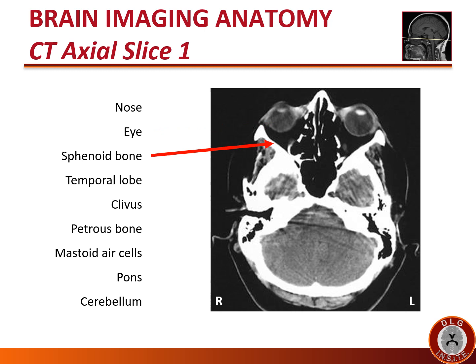The sphenoid bone is one of the bones that forms the orbit. Here, the inferior aspect of the temporal lobe is seen in the middle cranial fossa. The bony clivus is anterior to the brainstem. The word clivus means 'slide.' It sits at an angle in front of the brainstem, and the basilar artery courses rostrally between the brainstem and the clivus.